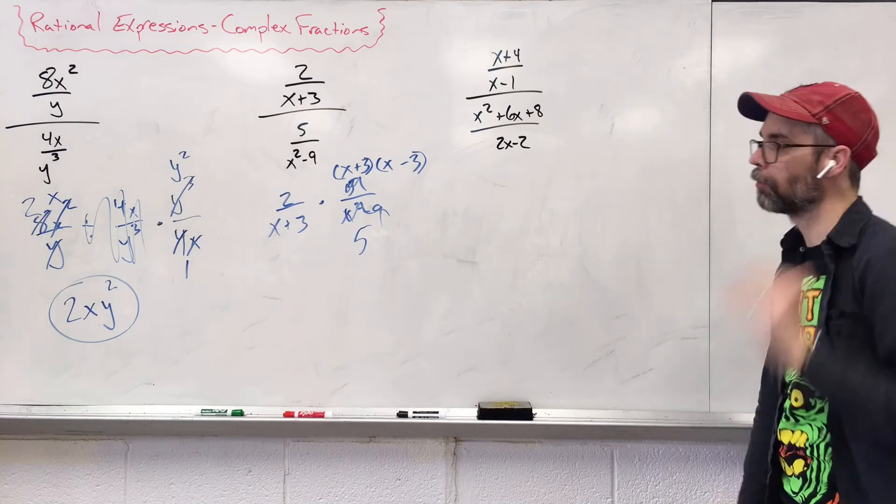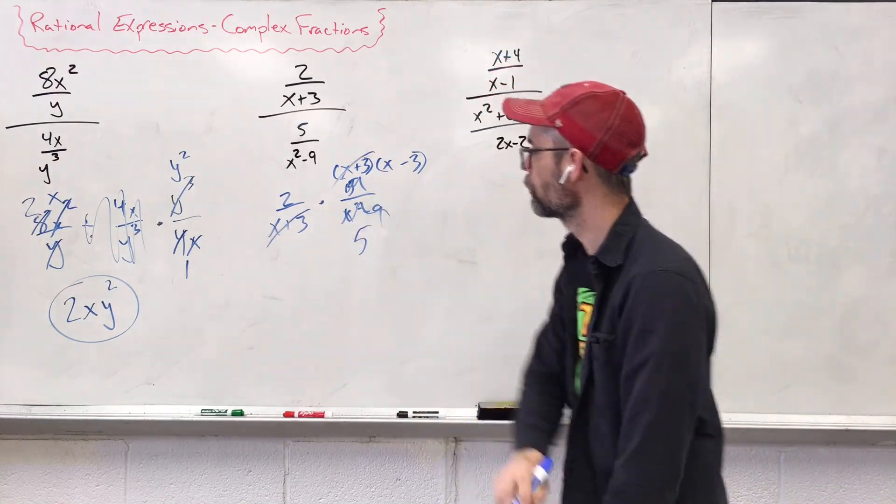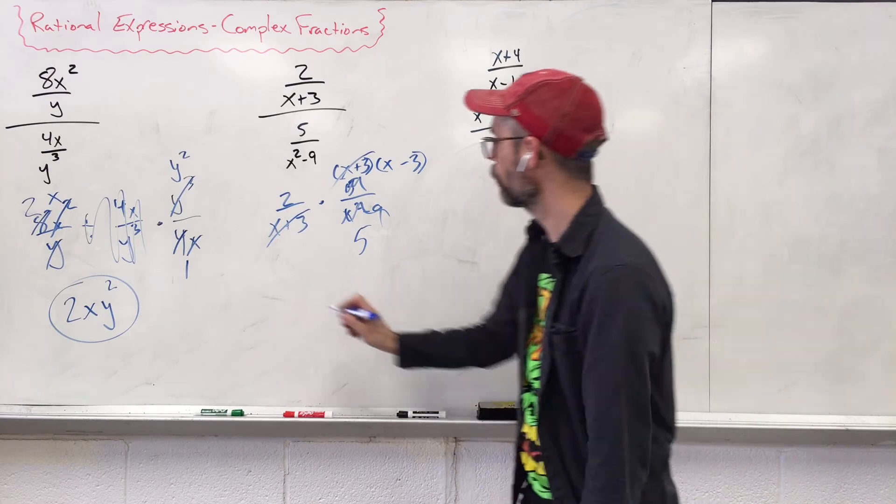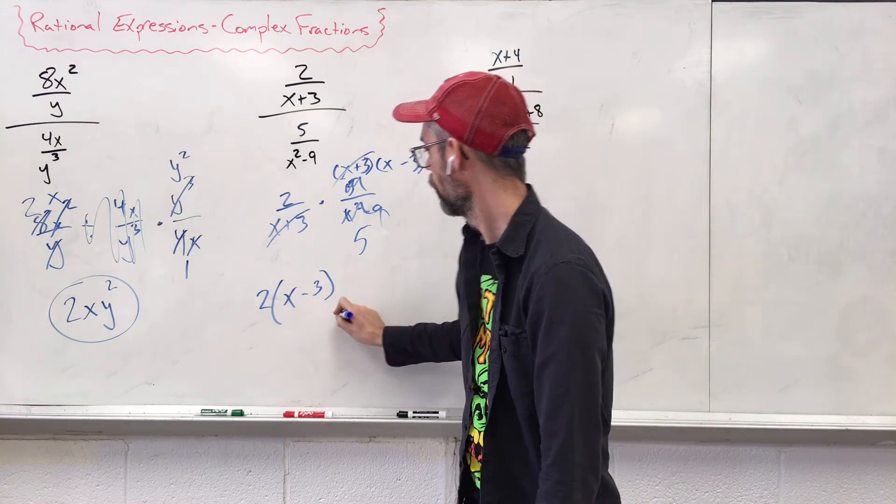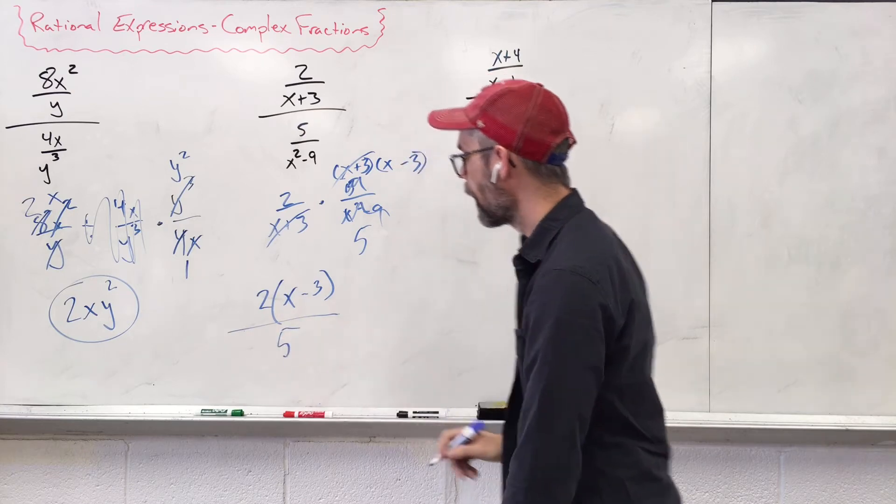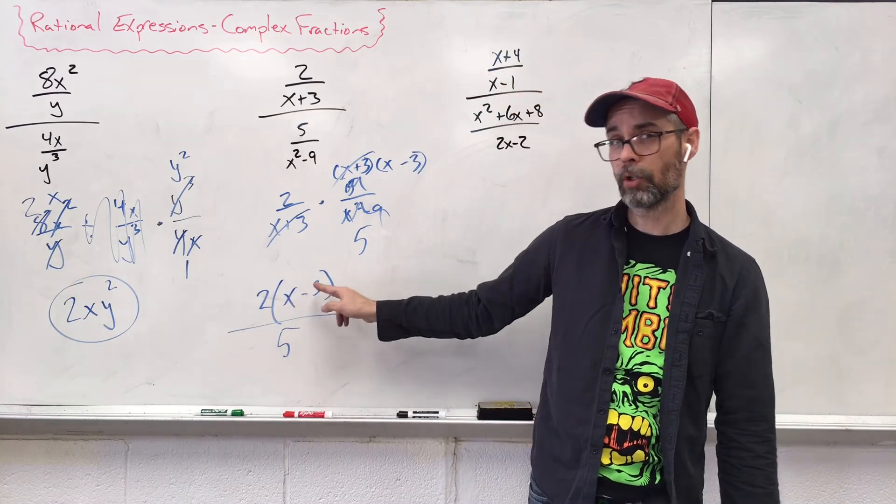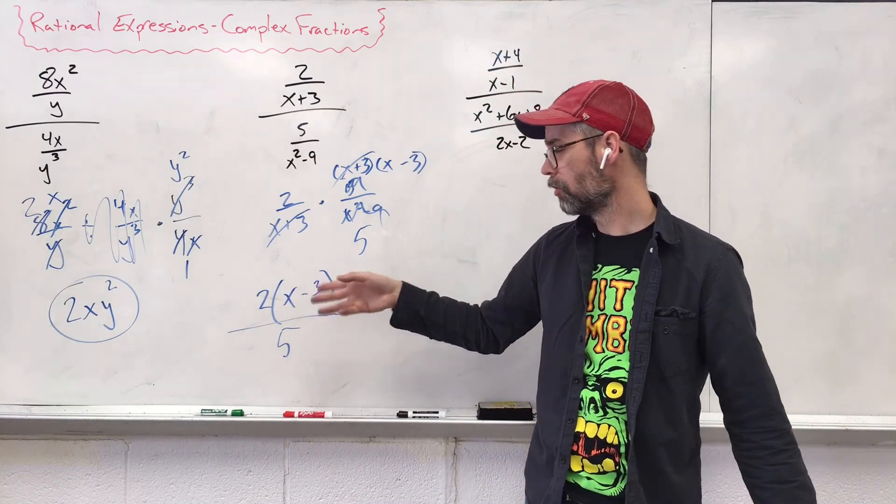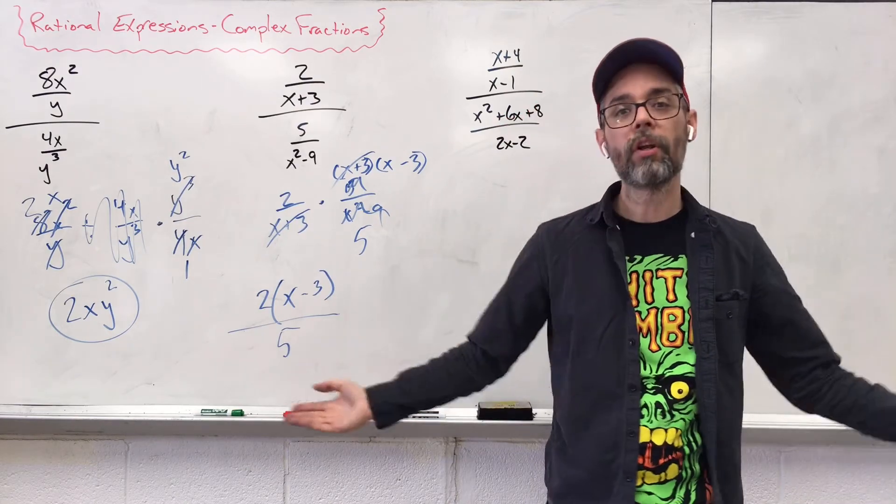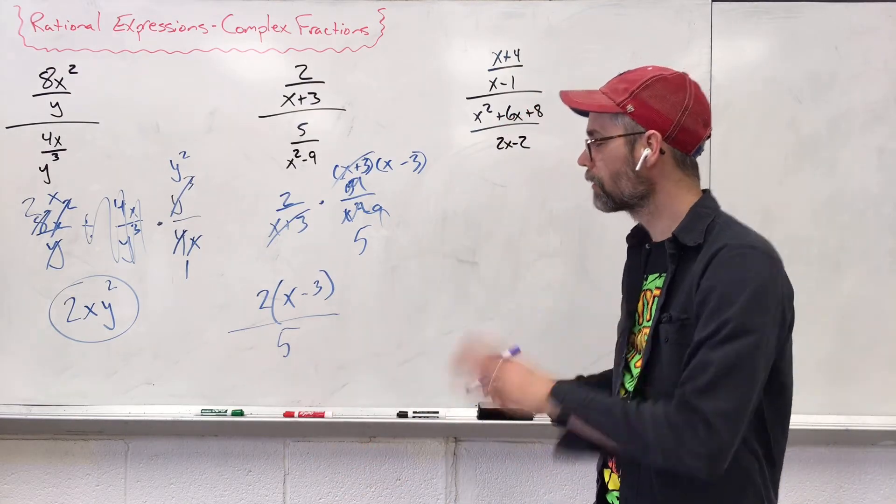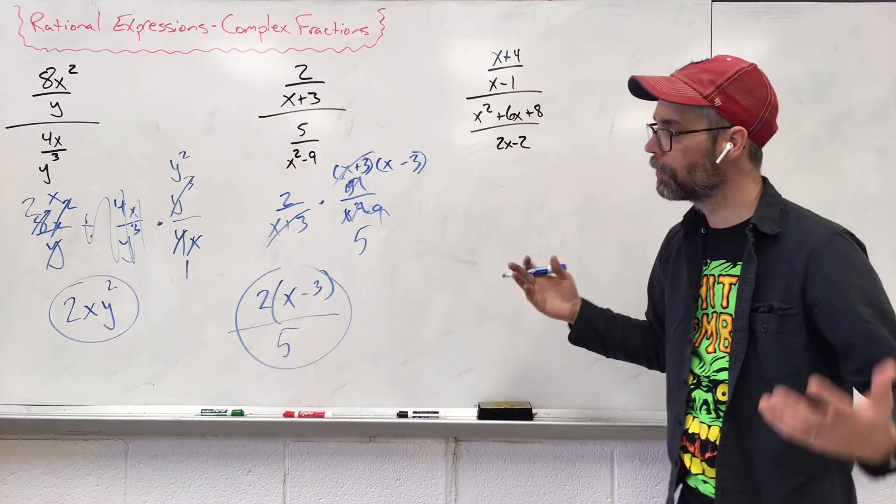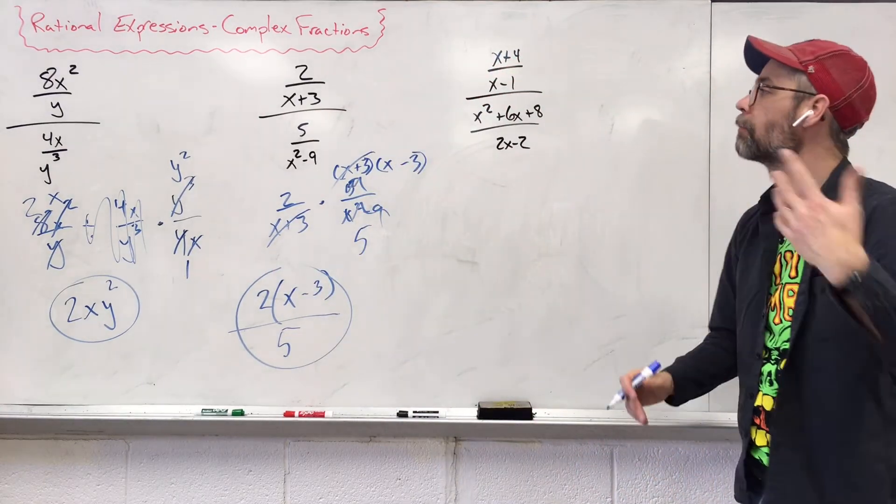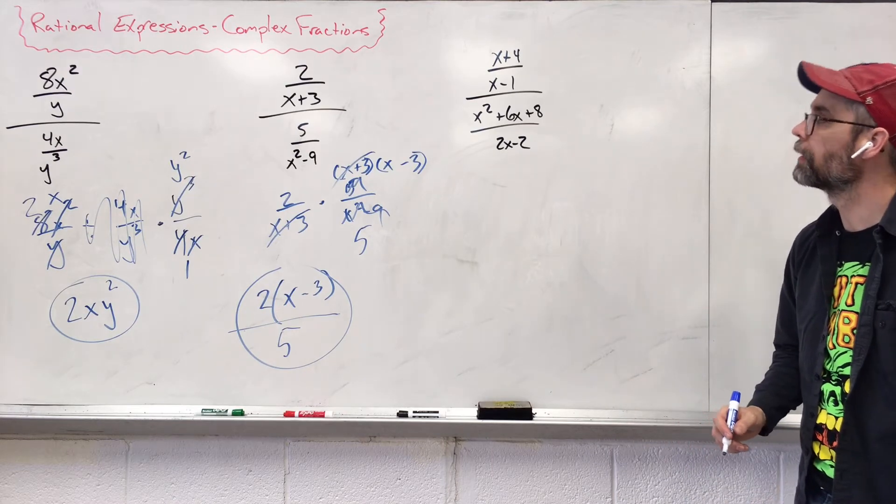Do we have anything up top and on the bottom the same? Yes. Plus three, plus three, gone. What are we left with? Two parenthesis x minus three and on the bottom, five. You could multiply these together to give you two x minus six, but we don't need it. We don't need to do all that extra work. Just leave it. We have things broken down into little pieces to help us out.